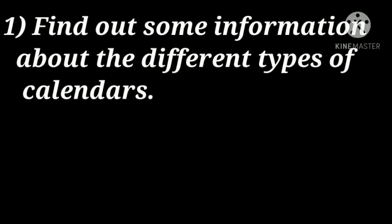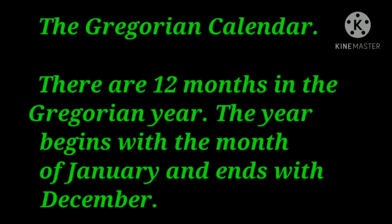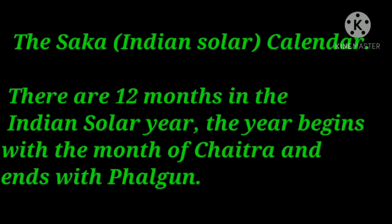There are basically two types of calendar: the Gregorian and the Shaka, that is the Indian solar calendar. In the Gregorian calendar, there are 12 months; the year begins with January and ends with December. In the Shaka Indian solar calendar, there are also 12 months; the year begins with the month of Chaitra and ends with the month of Falgun.